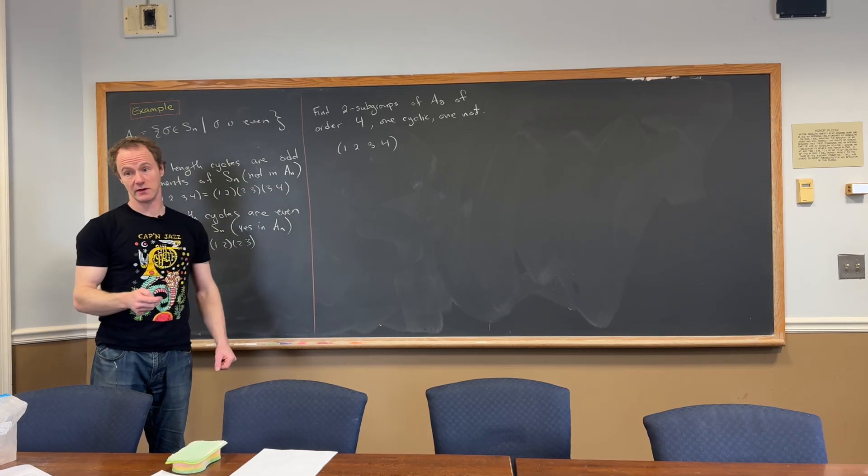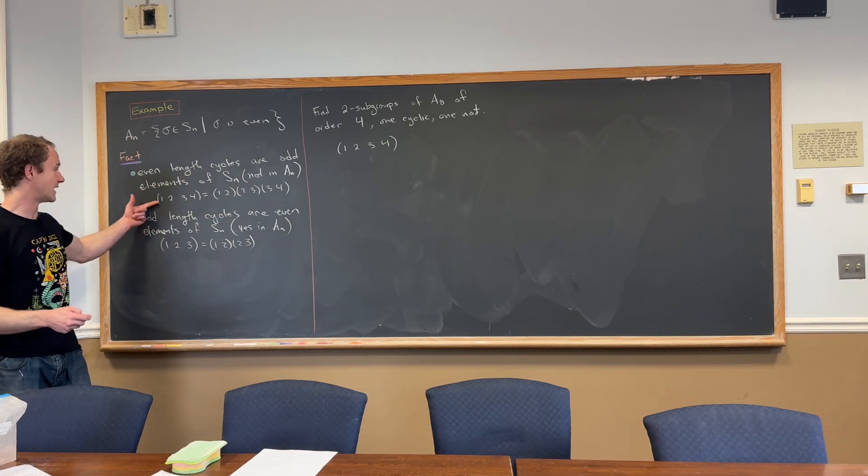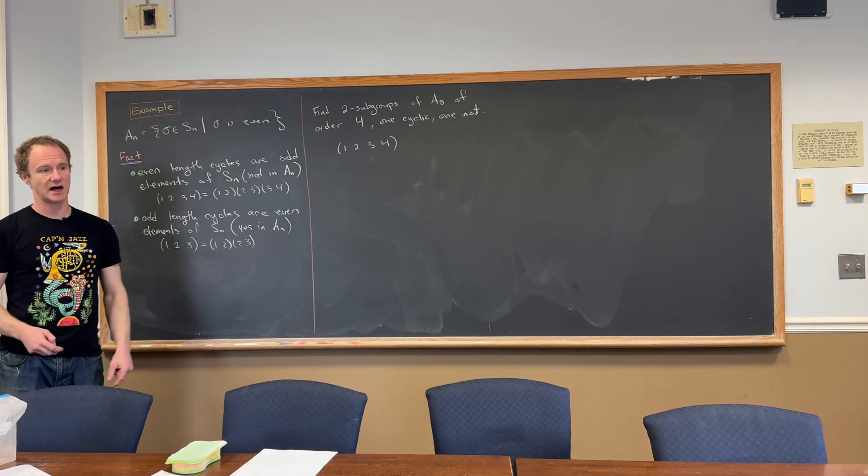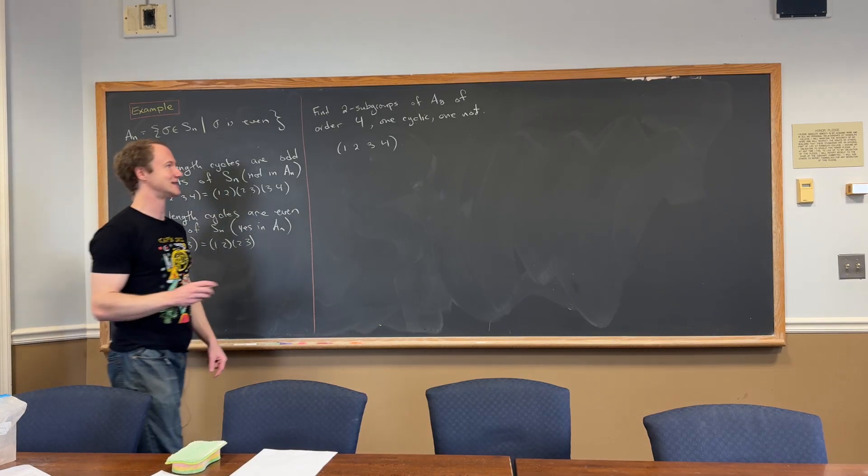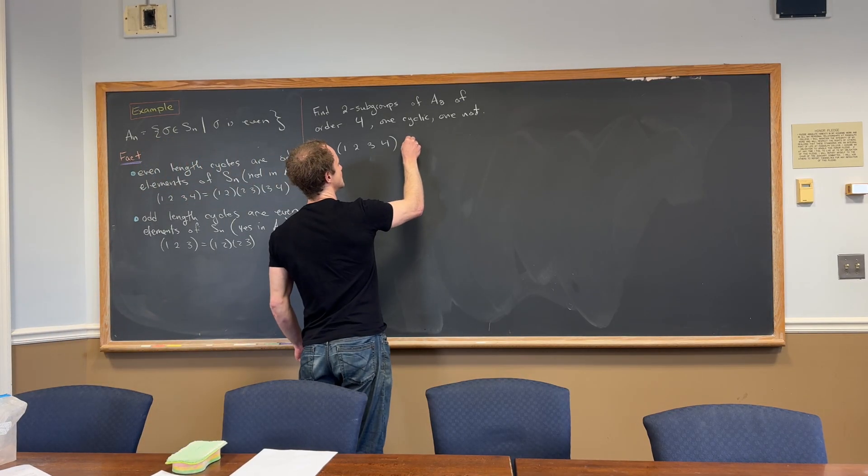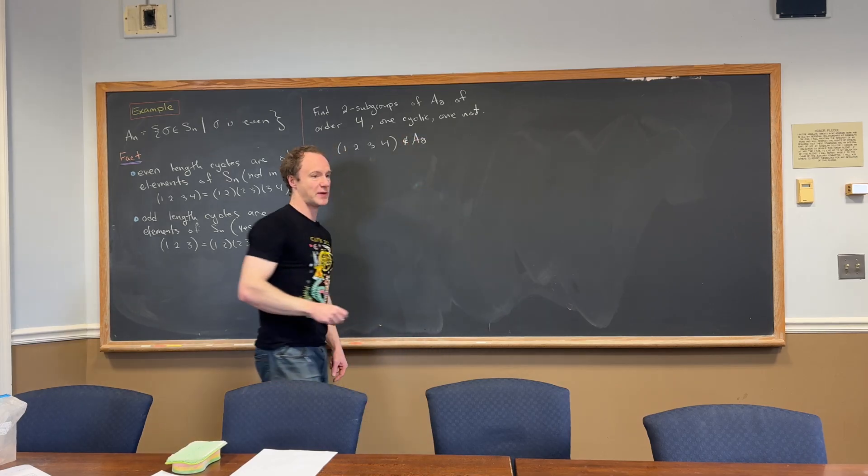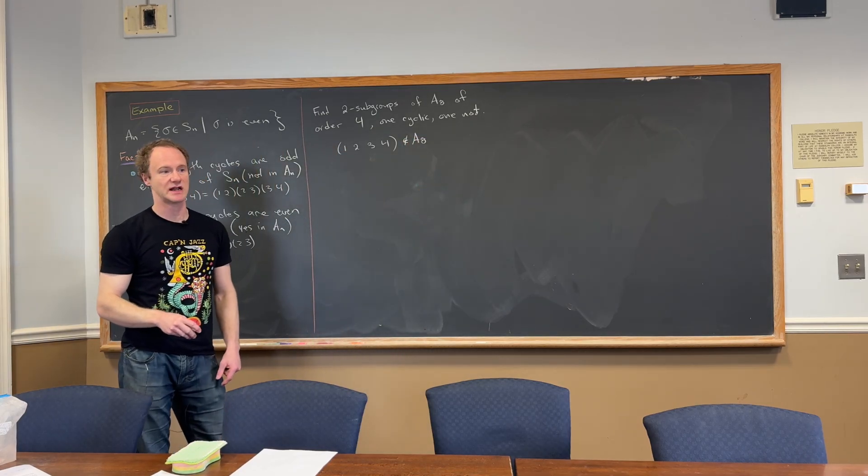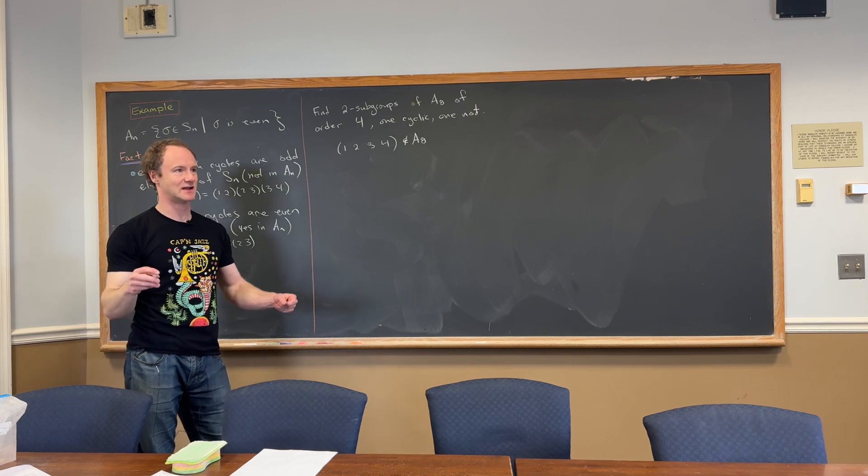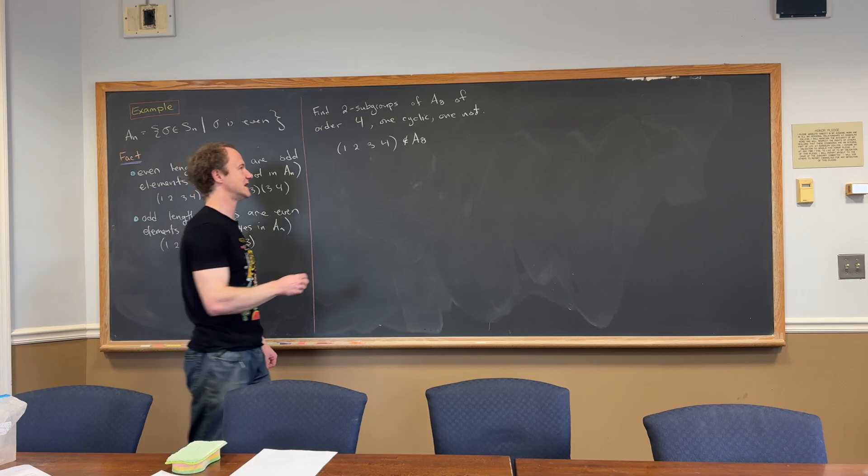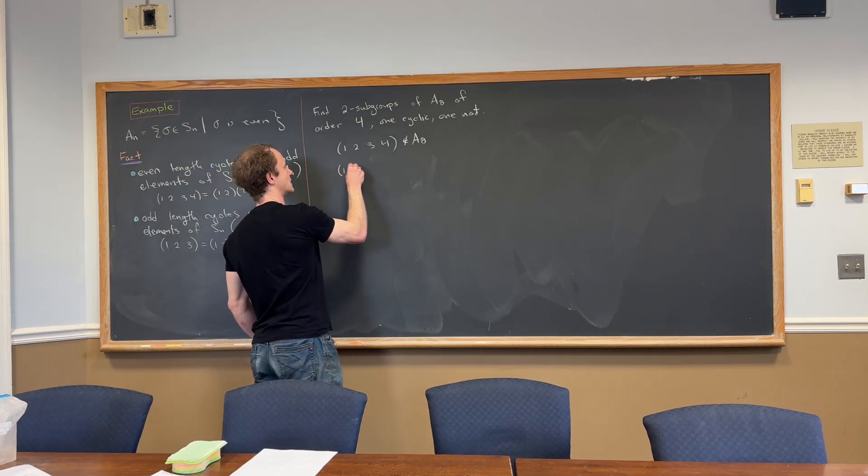But this is not an element of A8, because this decomposes into an odd number of transpositions. So it's not in A8. But we can append it with something to turn it into something that's kind of also got order 4 but is in A8. So can we think of a way to do that?